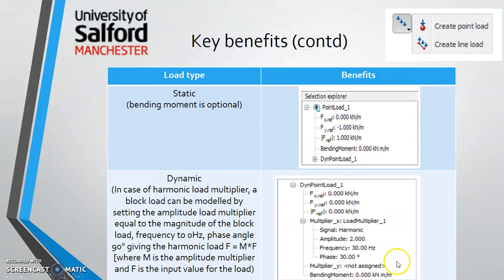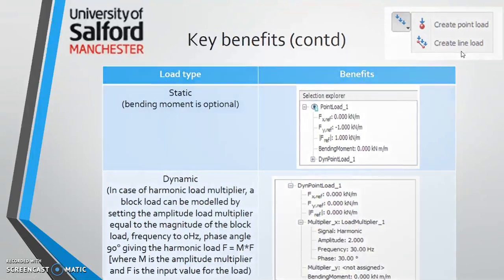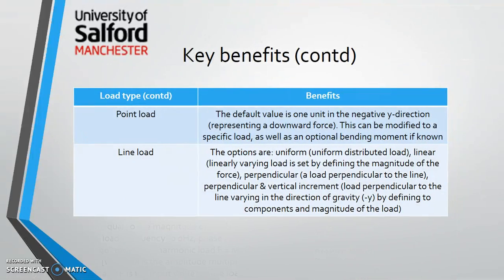Under dynamic loading, you can input the amplitude, select harmonic, and specify the frequency using a drop-down. The icon shown at the top is used to create loading, giving you the option to create either a point load or a line load. PLAXIS gives a default unit value for the point load. A negative sign represents a downward load, while a positive sign applies the load horizontally to the soil.